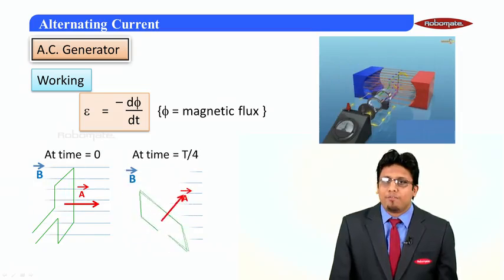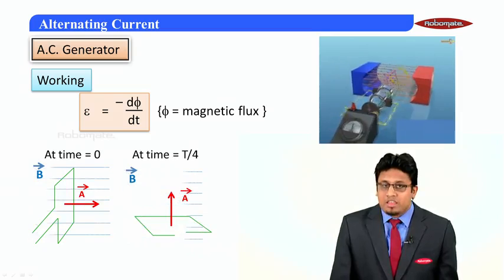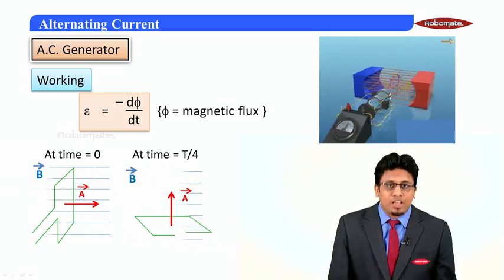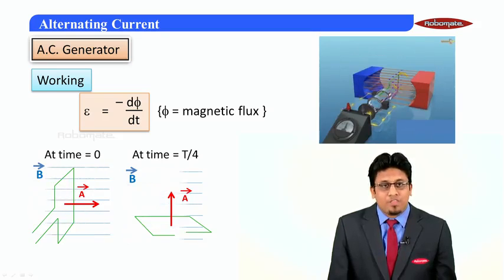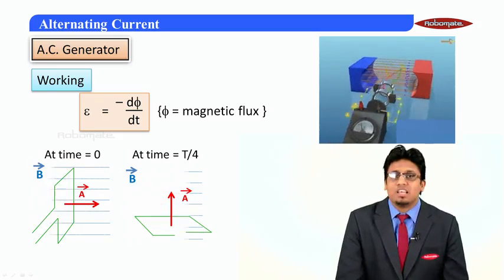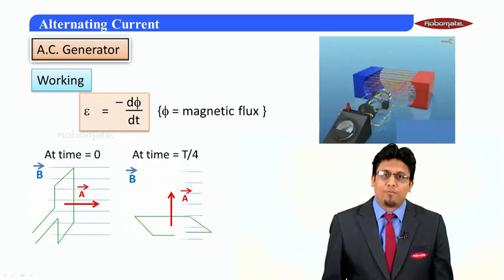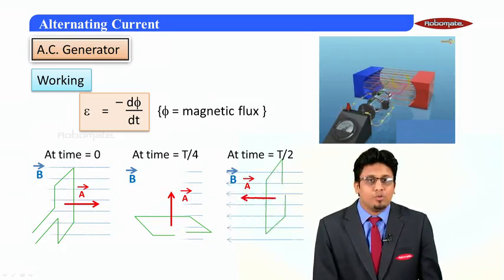So at T/4, the coil rotates by 90 degrees. Therefore, we can see that the magnetic field and the area vector are perpendicular to each other, and the magnetic flux through the coil is zero. On further rotation of 90 degrees, the time elapsed would be T/2.